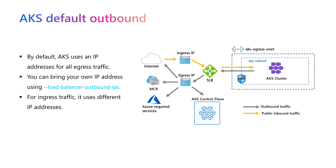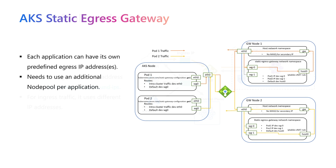But what if I want each one of my applications to have a different and specific static IP address for the egress? That's where AKS Static Egress Gateway comes into play. For each application, you can create a configuration where you specify the public IP address or the IP address prefixes to use for that application's egress traffic. The add-on will then create the gateway node pool for you for each one of your applications.